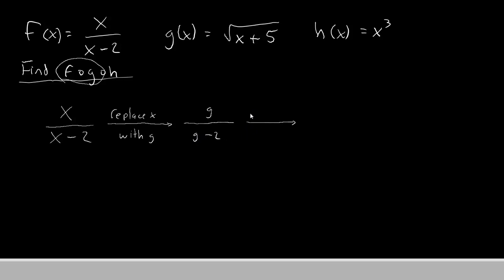Then we'll replace the g with its function, that's root x plus 5. So this g and this g get replaced with root x plus 5. Also note that this minus 2 will not go under the root. It remains outside because it was not part of g.